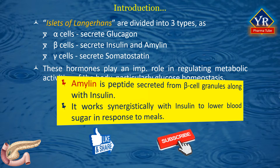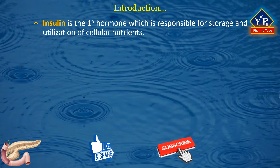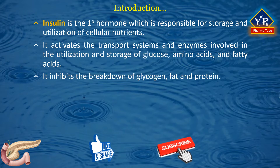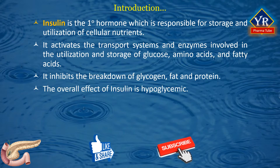Skeletal muscle is responsible for most of the glucose taken up from insulin stimulation. Insulin is the primary hormone responsible for controlling the storage and utilization of cellular nutrients. It activates the transport systems and the enzymes involved in the intracellular utilization and storage of glucose, amino acids, and fatty acids. Insulin also inhibits catabolic processes such as the breakdown of glycogen, fat, and protein.